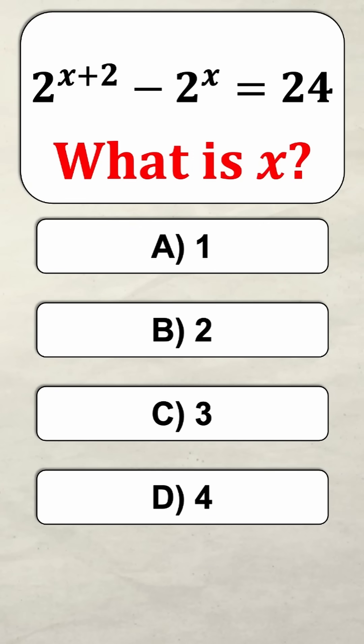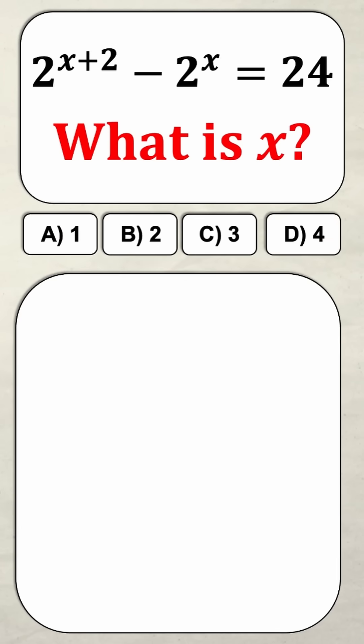Can you solve for x in this equation? Let's learn how to do it together. So we have 2 to the power of x plus 2 minus 2 to the power of x and that's equal to 24 and we're being asked to find what x is.